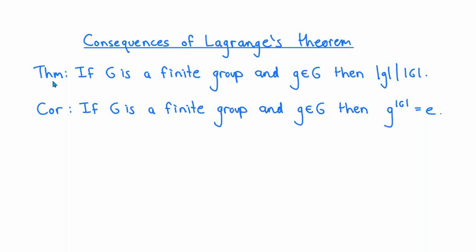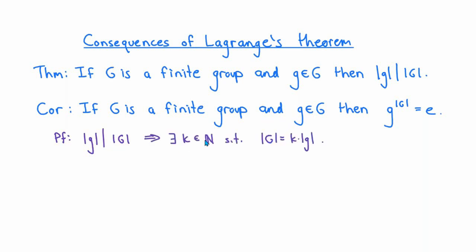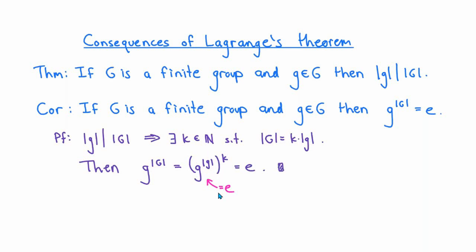A simple corollary is that if G is any finite group and g is any element of G, then g raised to the power of the order of G always equals the identity element. By the theorem, the order of any element divides the order of the group, so there exists a positive integer k such that the order of the group equals k times the order of the element. Then g to the power of the order of G equals g to the power of (order of g) to the k, and since g to the order of g is the identity, the whole expression equals the identity. That completes the proof.